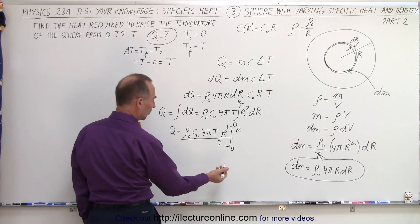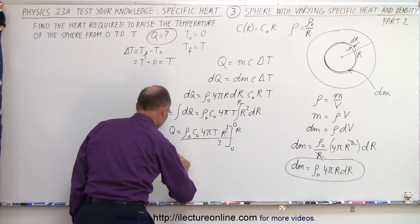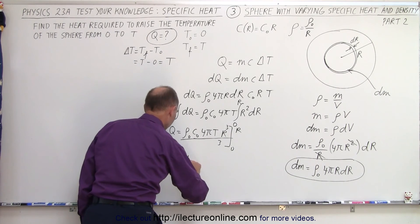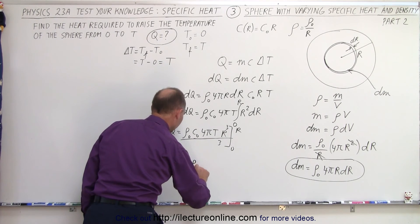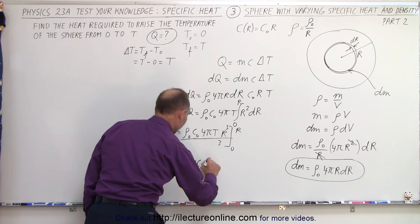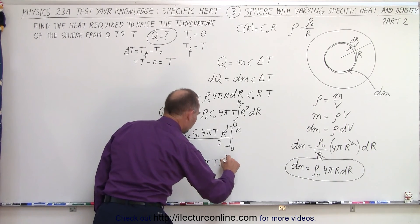So therefore, when we put in 0, we get nothing. Plug in r, we get the equation. Q is equal to 4 thirds times the density times C sub naught times pi times T times r cubed.